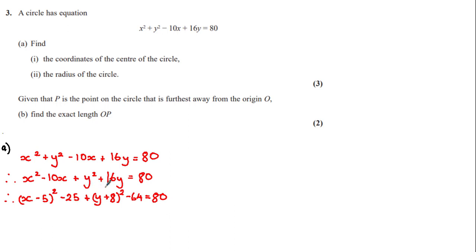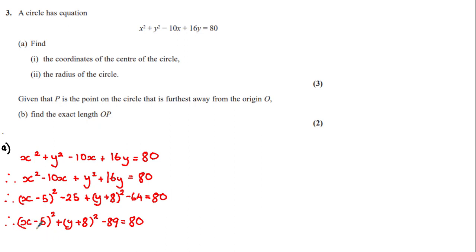Completing the square of the y terms, we get y plus 8 squared minus 64. We got the 8 by halving the 16, and then we subtract by the square of this number, which is minus 64, and we set that all equal to 80. We can simplify the left-hand side by doing minus 25 minus 64 to get: x minus 5 all squared plus y plus 8 all squared minus 89 is equal to 80.